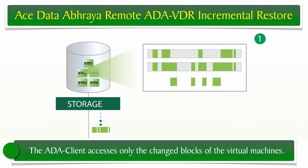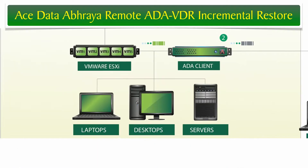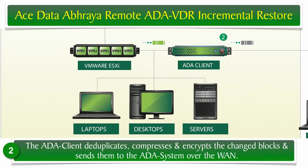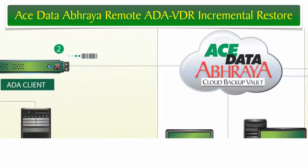Step 1: The Abrea client accesses only the changed blocks of the virtual machines during the backup. Step 2: The Abrea client deduplicates, compresses and encrypts the changed blocks and sends them to the Abrea system over the WAN.